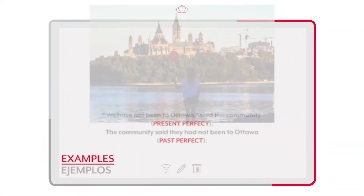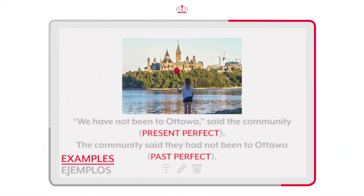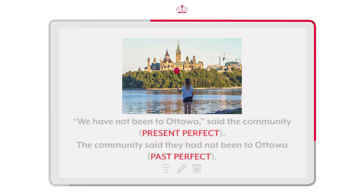Examples. 'We have not been to Ottawa,' said the community. (Present perfect.) The community said they had not been to Ottawa. (Past perfect.)